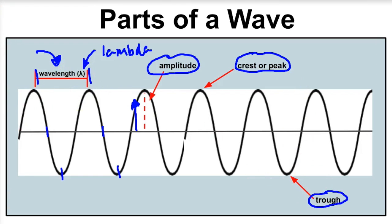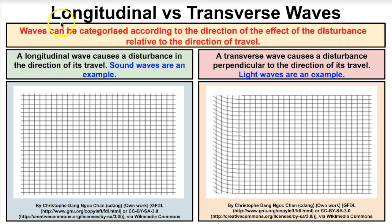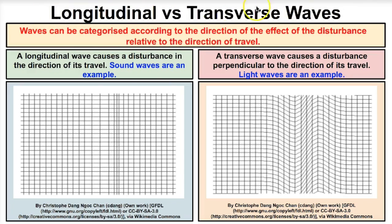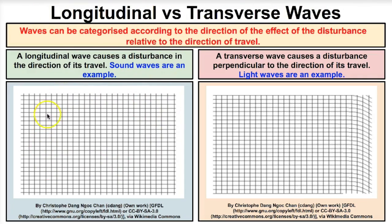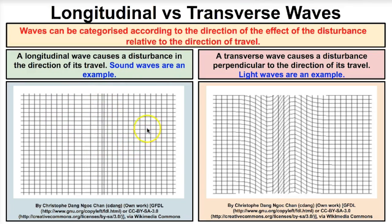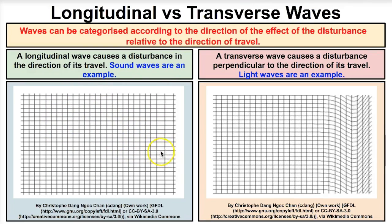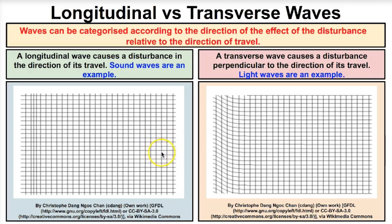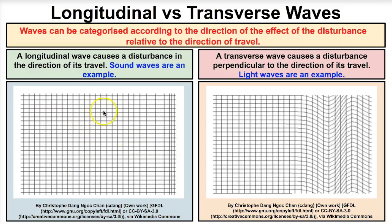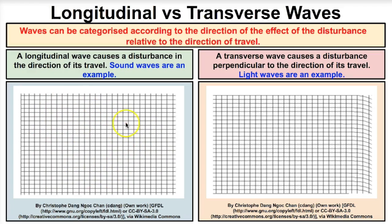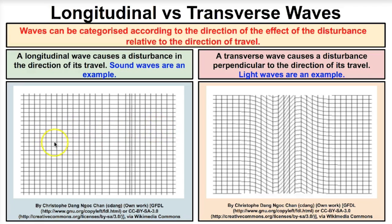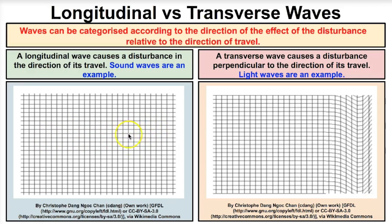Let's now take a look at the different types of waves. The two main types are longitudinal waves versus transverse waves. A longitudinal wave causes a disturbance in the direction of its travel. For example, the sound coming from my voice right now reaches your ears through tiny longitudinal sound waves. Things get compressed together and travel in one direction.